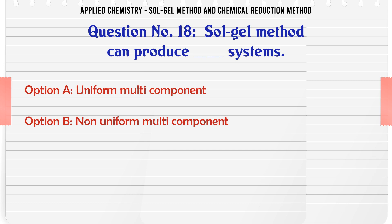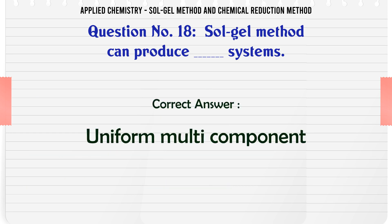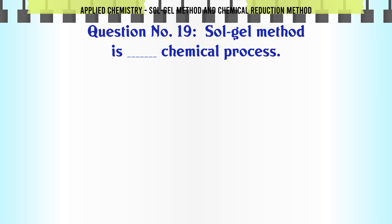Sol-gel method can produce which type of systems? A. Uniform multi-component, B. Non-uniform multi-component, C. Multi-component, D. Non-uniform multi-component. The correct answer is Uniform multi-component.